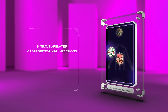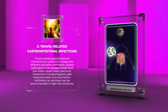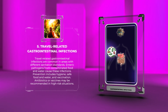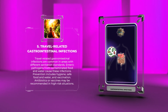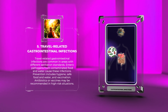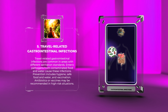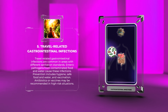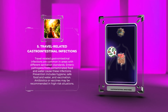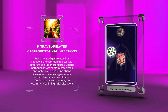Travel-related gastrointestinal infections are common in areas with different sanitation standards. Enteric pathogens from contaminated food and water cause these infections. Prevention includes hygiene, safe food and water, and vaccination. Antibiotics or vaccines may be recommended in high-risk situations.